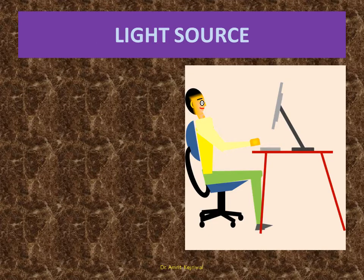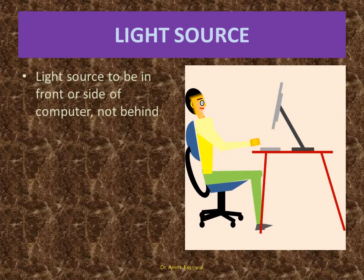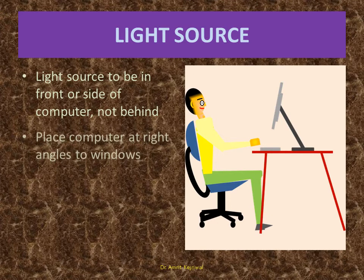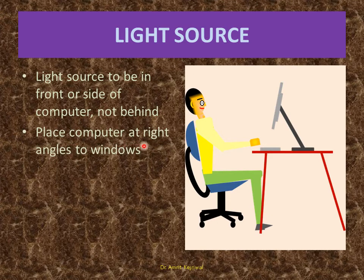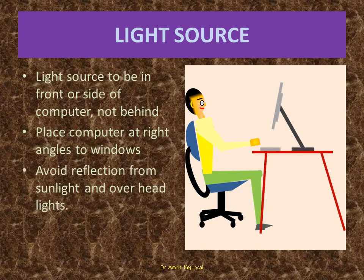When you're sitting at a computer, you have to make sure of the light source. Light source should be kept to the side, front or side of the computer and not behind. Place computer at right angles to windows. Avoid reflection from sunlight and overhead lights.